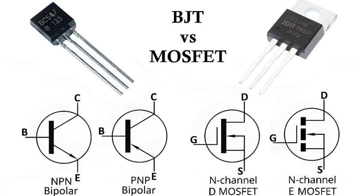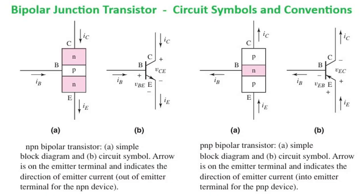Welcome back to the channel. In today's video, we'll compare two of the most important transistors in electronics: MOSFETs and BJTs. We'll explain what they are, how they work, their applications, and the key advantages of each. By the end, you'll clearly understand when to use a BJT and when a MOSFET is the better choice. Let's start with the basics.